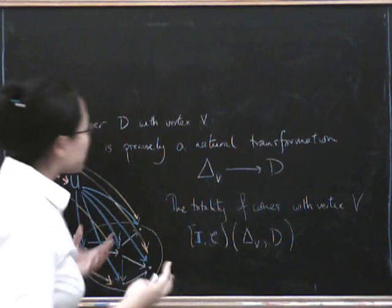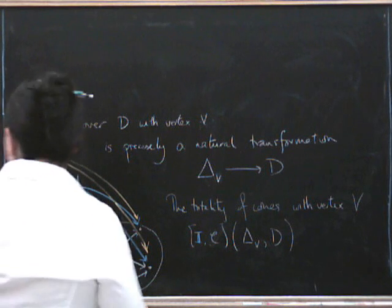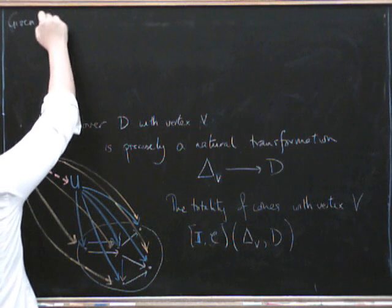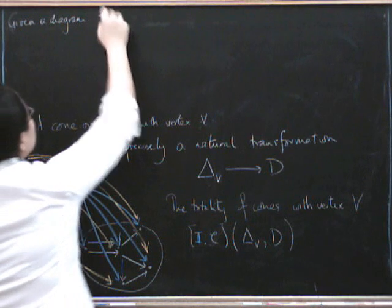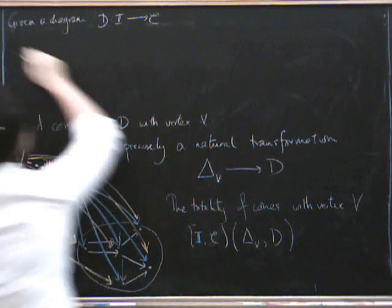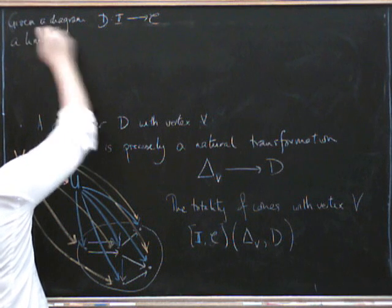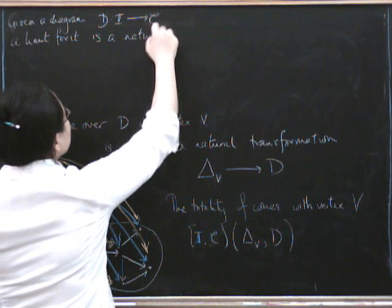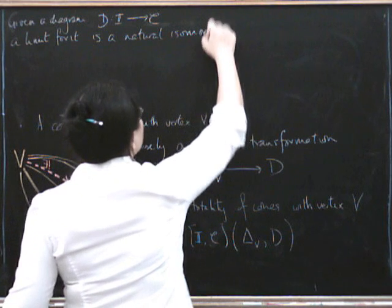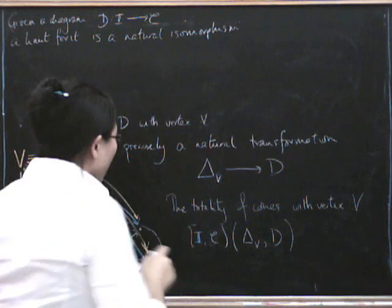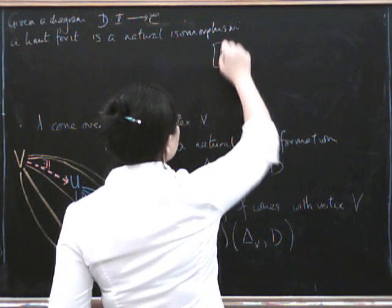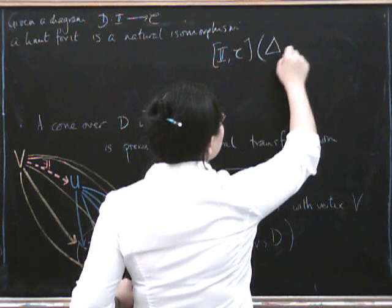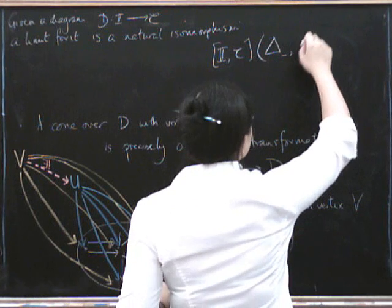Not just any old isomorphism, but an isomorphism that satisfies the naturality. And the naturality of that isomorphism is the thing that tells you that this is actually determining some kind of composition condition. So what we're going to have is a natural isomorphism between something and something else. And I think I'm just going to write it down at this point. So given a diagram D from I to C, a limit for it is a natural isomorphism.